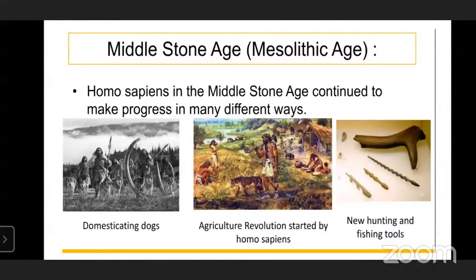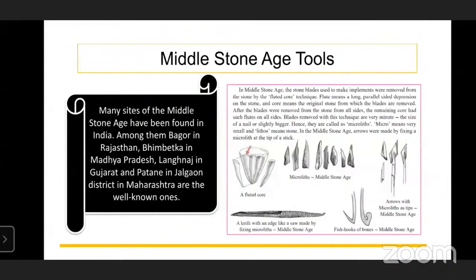Remains of tools from the Old Stone Age have been found in India at various places from Kashmir to Tamil Nadu. However, not many human fossils from the Old Stone Age have been found in India. In the Middle Stone Age, many sites have been found in India - among them, Bangal in Rajasthan, Bhimbetka in Madhya Pradesh, Langhnaj in Gujarat, and Patne in Chalgaon district in Maharashtra are the well-known ones.